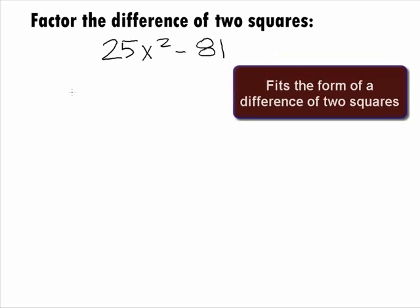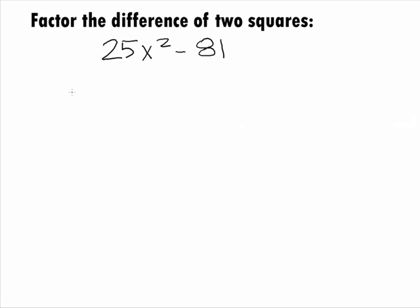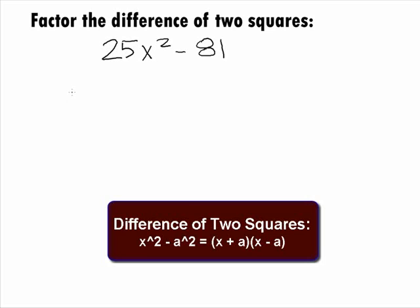This binomial is a special type of binomial called the difference of 2 squares. You can factor the difference of 2 squares as follows: if you have x squared minus a squared,